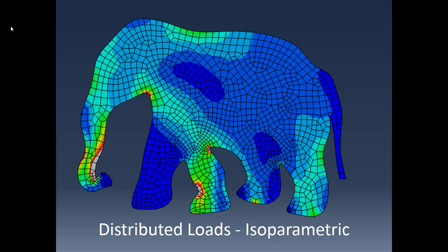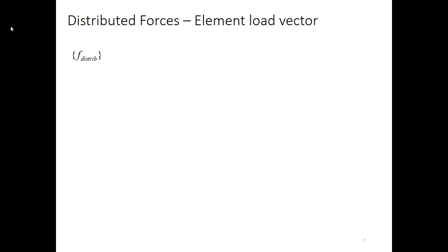This short video goes through how we calculate distributed load vectors for isoparametric quadrilateral elements. Whenever we have a load that's distributed over space, we need to find some way of converting that into a load that's applied to individual nodes. The way that we do that is by developing an element load vector. We look at the element, see how it's affected by that distributed load, and then calculate a load vector that gives us the loads at each one of the nodes.